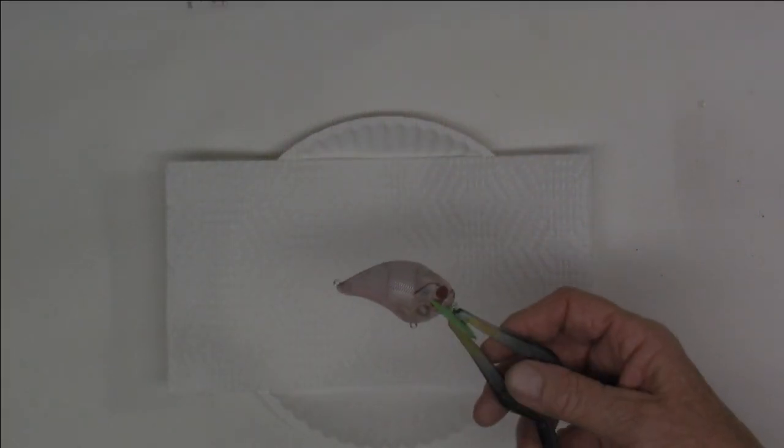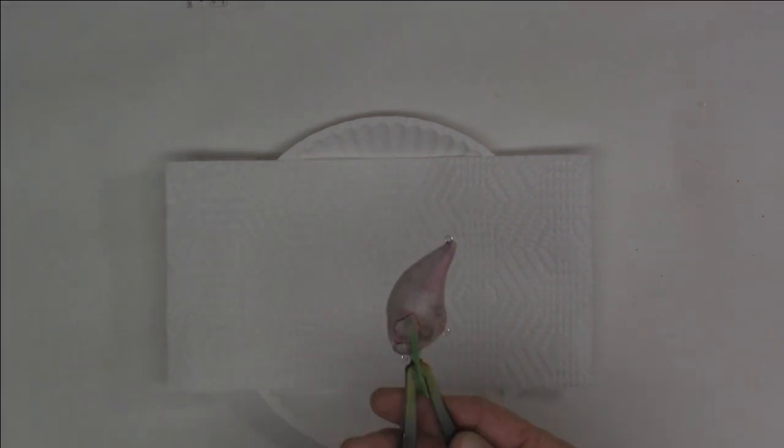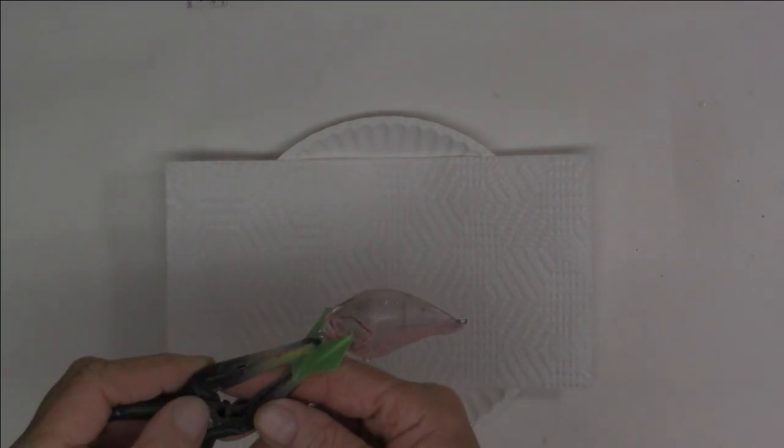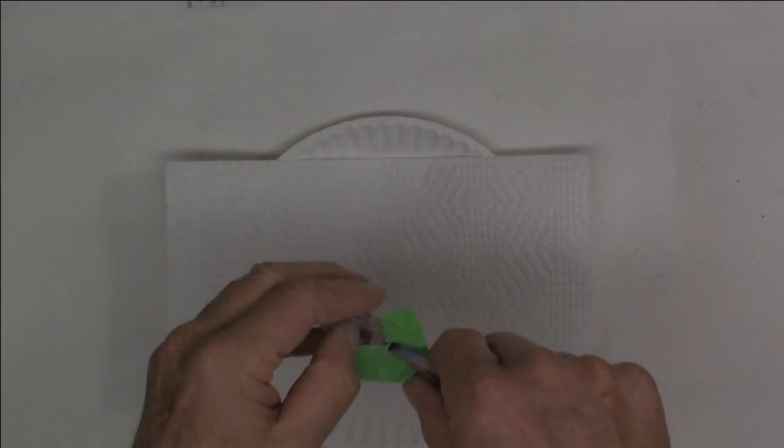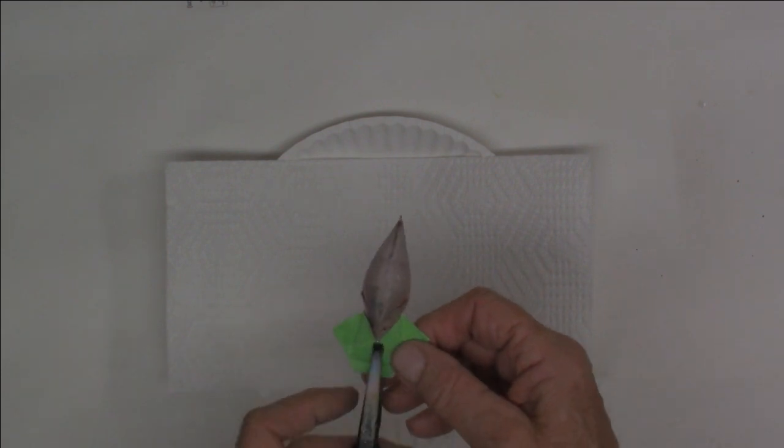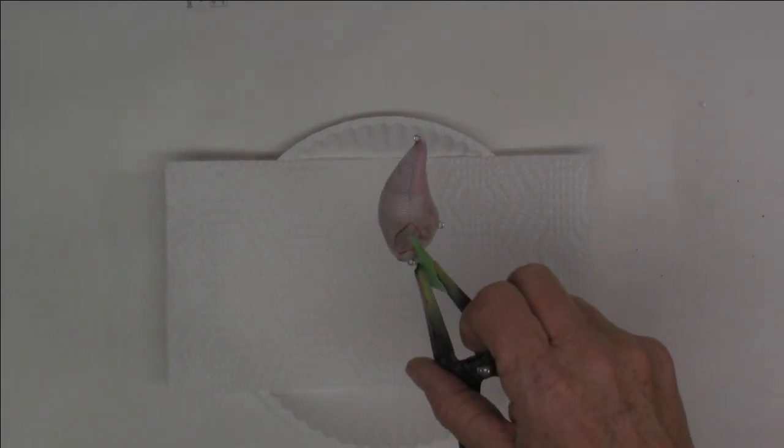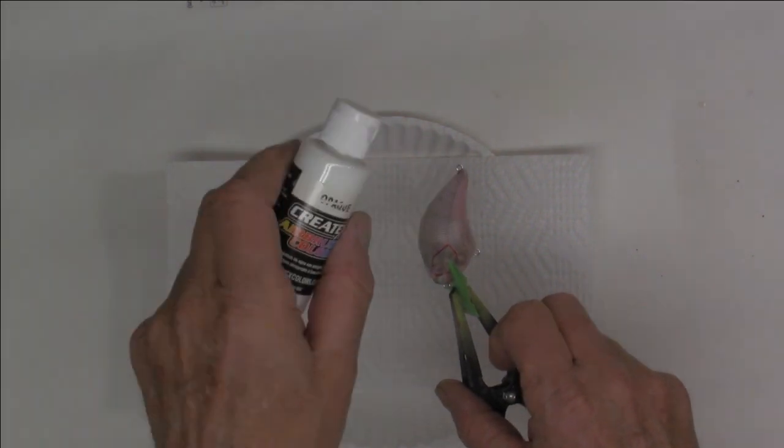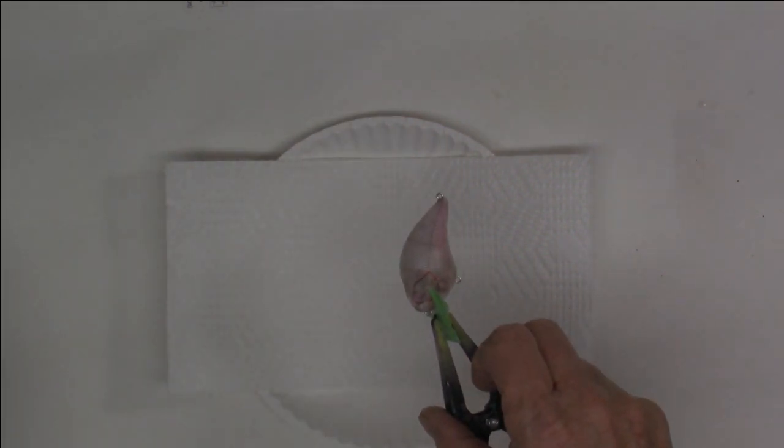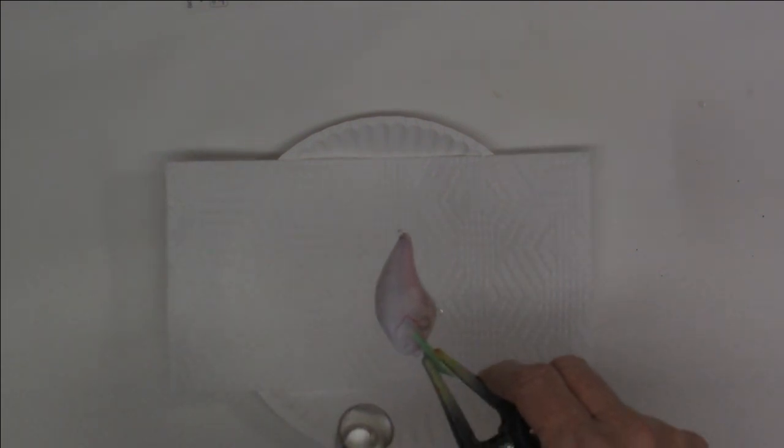All right guys, we're ready to put on a base coat. If you take a look, this lure looks a little funny, it's got some paint on it. That's because I painted this lure a week or so ago and I didn't like it, so I took a scrubby and some hot water, took it all off and start all over. Gonna start with Createx opaque white to get our base coat on.